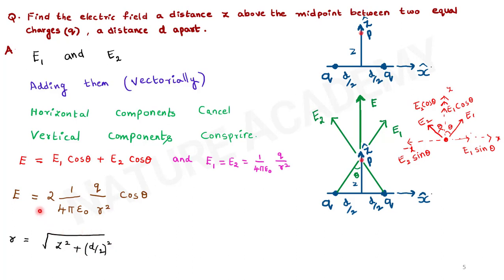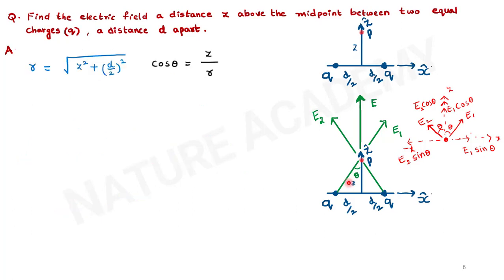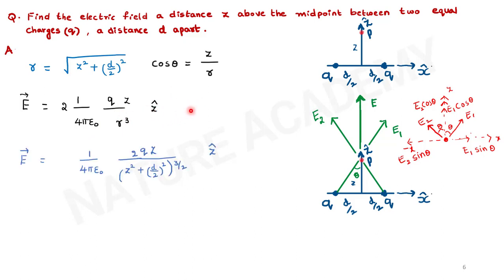So E equals 2 times 1 over 4π epsilon-naught times Q over r-squared times cos theta. Here cos theta equals z over r. Substituting: E-bar equals 2 times 1 over 4π epsilon-naught times Qz over r-cubed times z-cap. Substituting the value of r: E-bar equals 1 over 4π epsilon-naught times 2Qz over (z-squared plus (d/2)-squared) to the power 3/2, times z-cap.